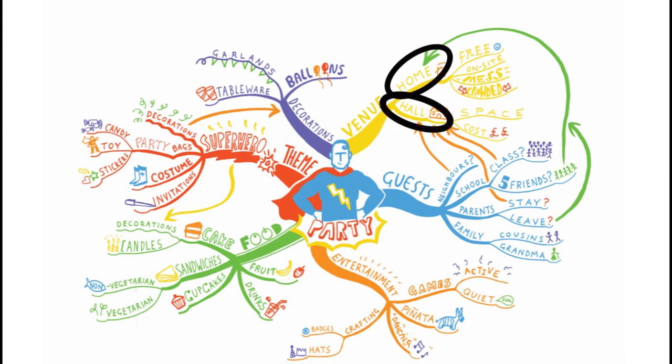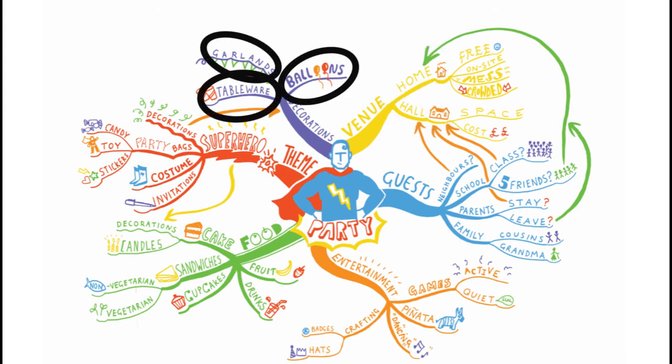The decorations branch includes ideas like balloons, garlands, and tableware. These are all sub-topics branching out from the decorations node of the mind map.